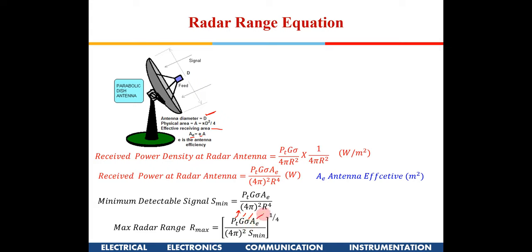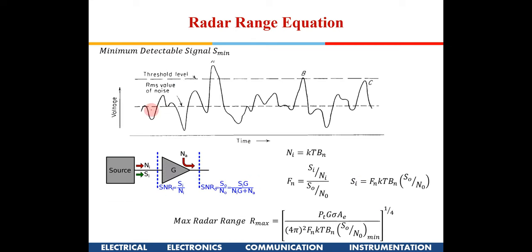There is an issue with keeping S_min very low. Any receiver connected to an antenna always picks up some noise. We must set a threshold voltage so noise doesn't trigger false alarms — only actual reflections above the threshold produce a blip on the console. If the threshold is set too low, unwanted ground noise and spurious reflections cause many blips, making it very difficult for the radar operator to distinguish real targets from false alarms.